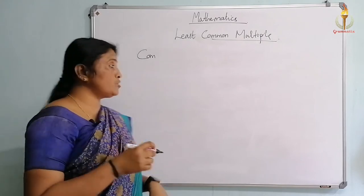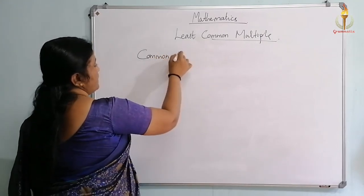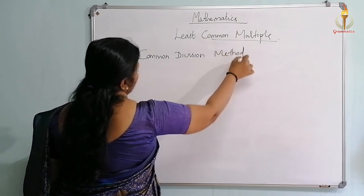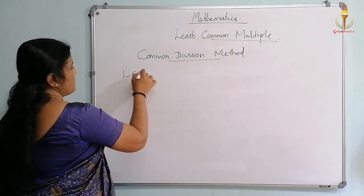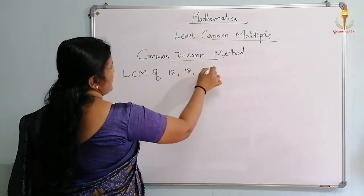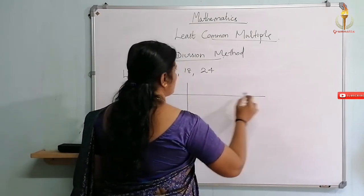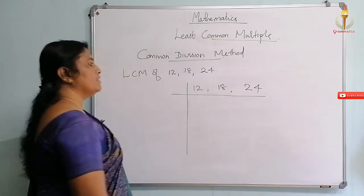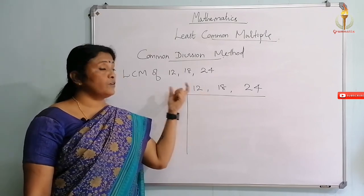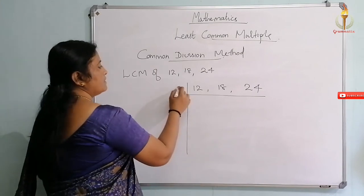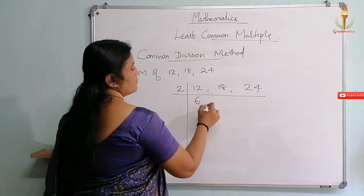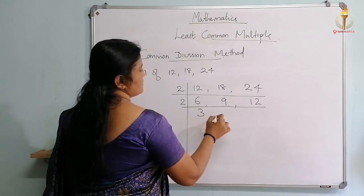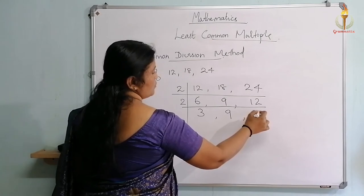The next method is the common division method. Taking the same numbers: LCM of 12, 18, and 24. Write the given numbers separated by commas in a line. Start with the least prime factor that can divide them. Divide by 2: you get 6, 9, 12. Divide by 2 again: 3, 9, 6. Note that 9 is not divisible by 2, so write 9 as it is. Divide by 2: 3, 9, 3.